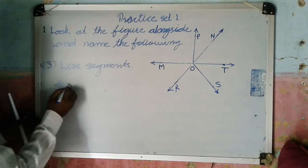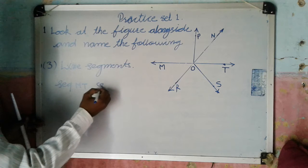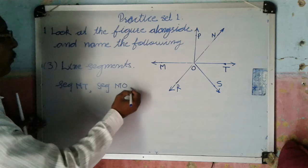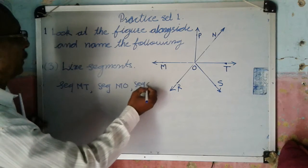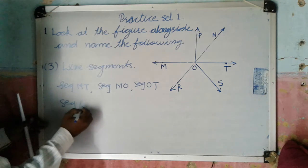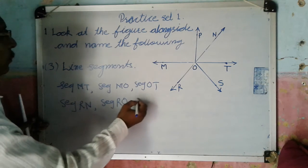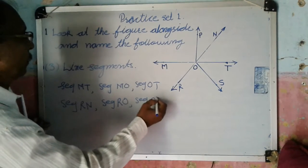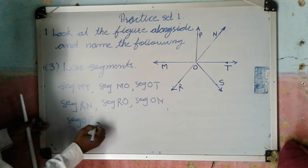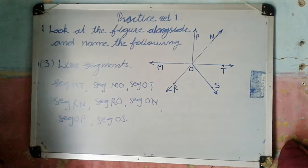So we can write these names: segment MT, segment OT, segment RN, segment RO, segment ON, segment OP, segment OS. These are all line segments.